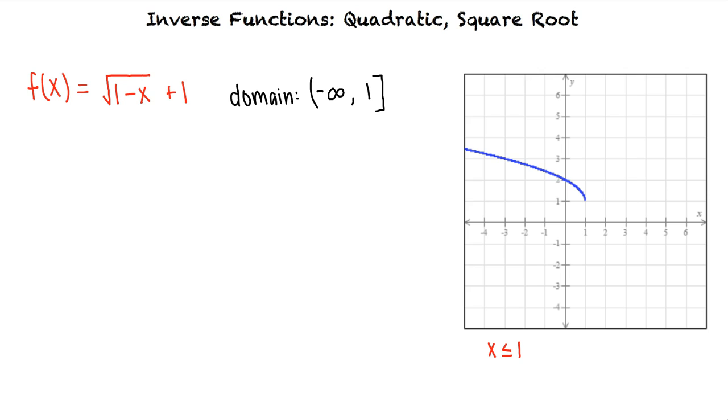The plus 1 in our function corresponds to a vertical translation one unit upward. So the minimum value of our function, f(x) equals the square root of 1 minus x plus 1, is 1.